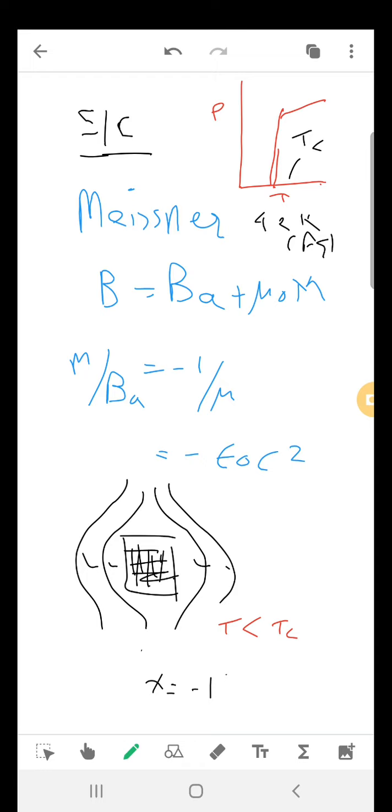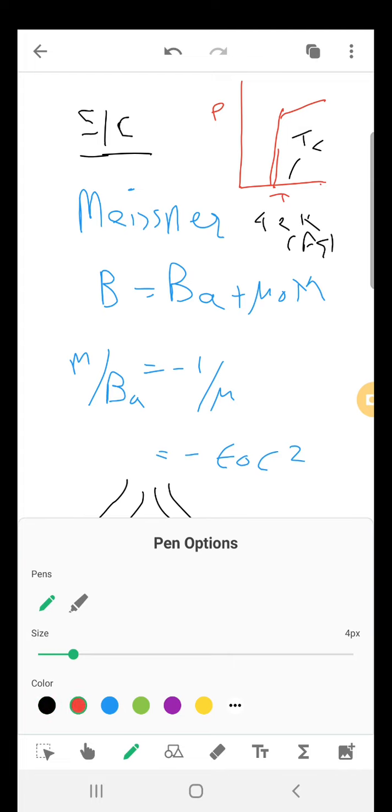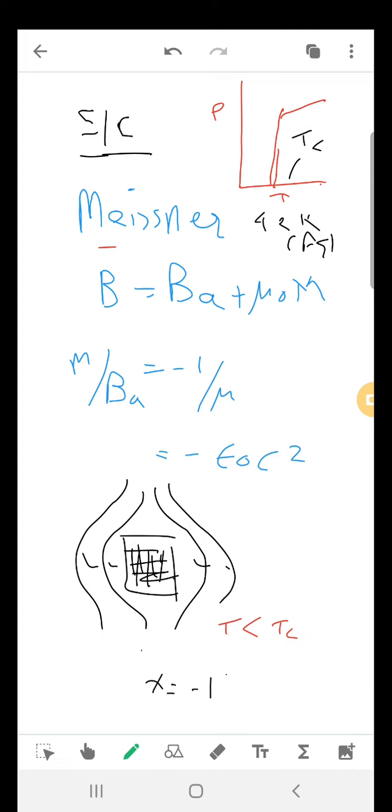Another property that superconductivity exhibits is the Meissner effect, where it excludes magnetic field when allowed to pass through the superconductor. It is considered to be a perfect diamagnetic state with a susceptibility value of minus 1.